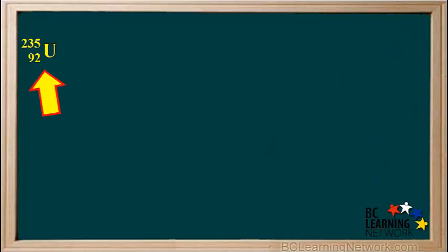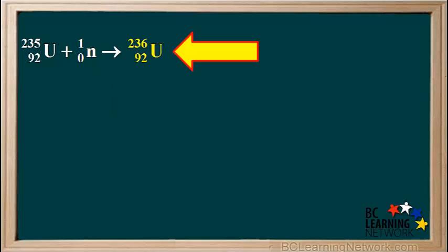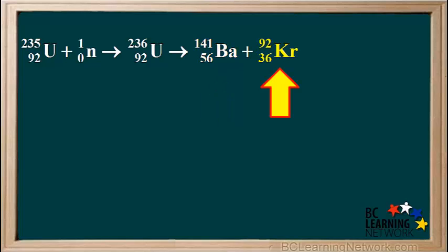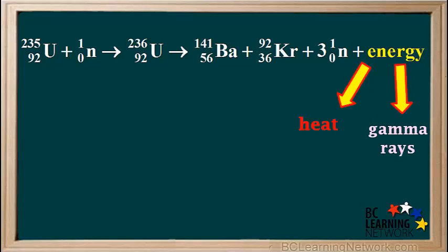We will write a nuclear equation for this process. We start with the uranium-235 nucleus and add a neutron to it. The uranium-235 nucleus captures this neutron and forms a nucleus of uranium-236, which is very unstable and splits to form two smaller nuclei. One is barium-141, and the other is krypton-92. Three neutrons are also released, as well as lots of energy, in the form of heat and gamma rays.